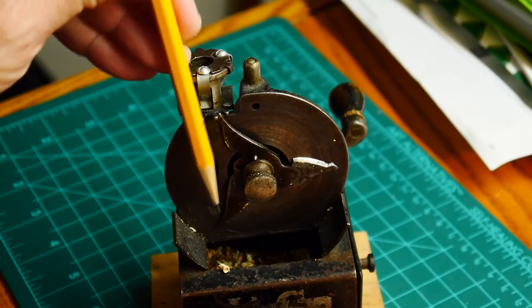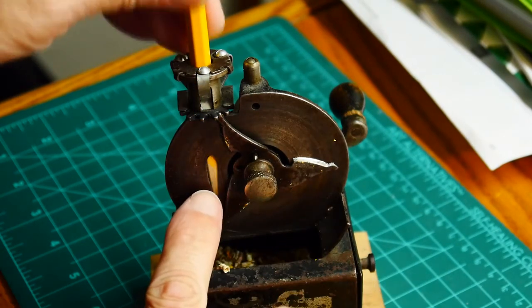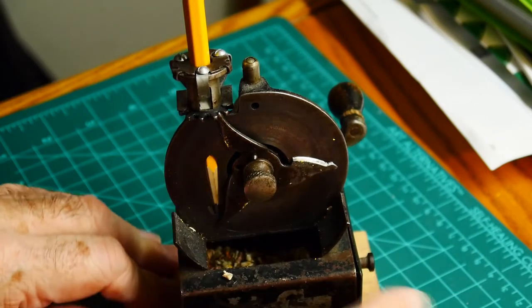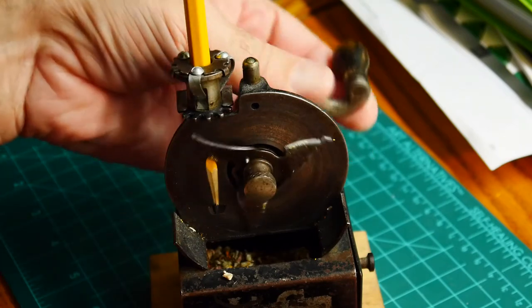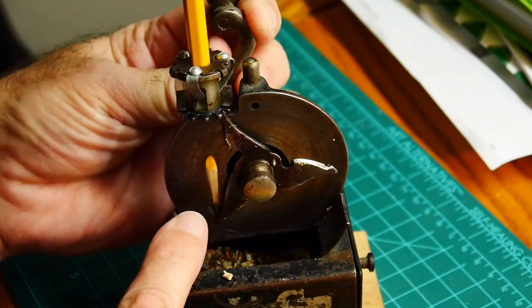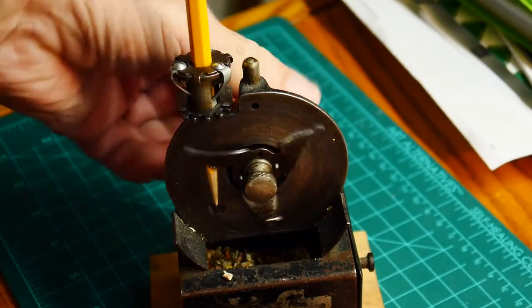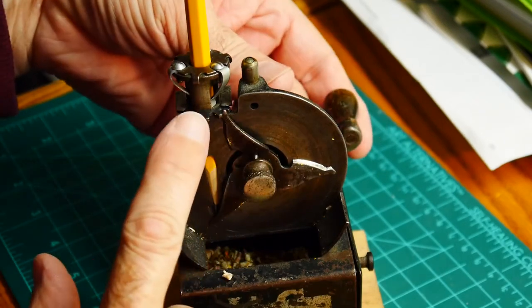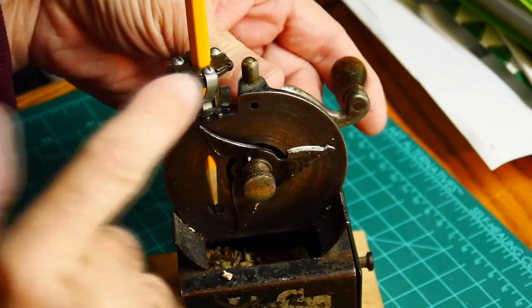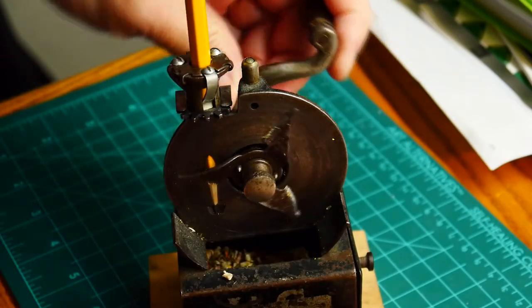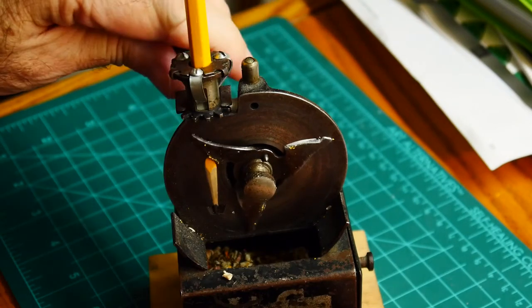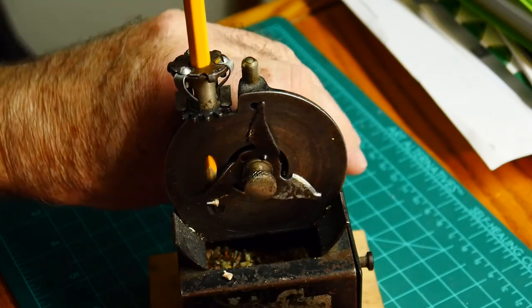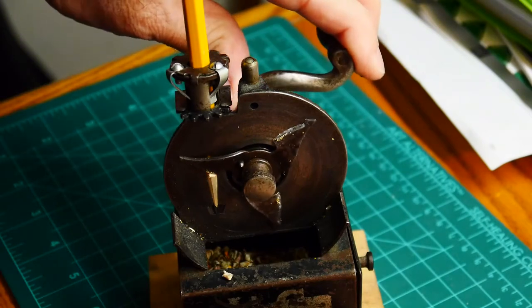Every time the blade comes around, the pencil comes through a slot here at a slight angle, the angle that you want to shave the wood. These blades will come and shave off a little bit of the wood each time. As the blade comes to the top, there's a little gear here that indexes the pencil by a tiny bit, so you're shaving a different part of the pencil. You got a nice little curl there, there's a good curl.